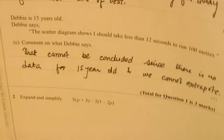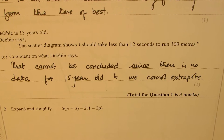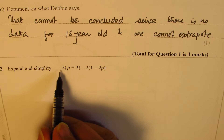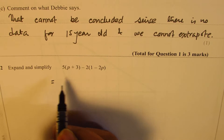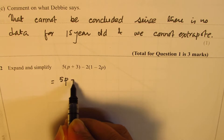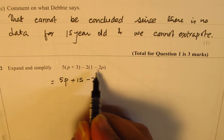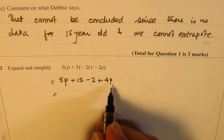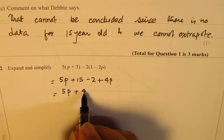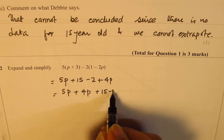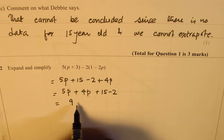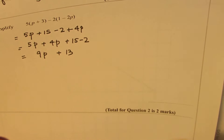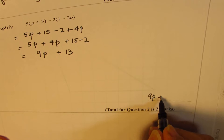Question 2: expand and simplify. 5 times (p + 3) minus 2(minus 2p). Multiplying out: 5p + 15, then minus 2 plus 4p. Combining like terms: 5p + 4p = 9p, and 15 minus 2 = 13. So the answer is 9p + 13.